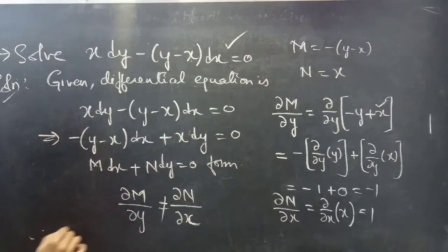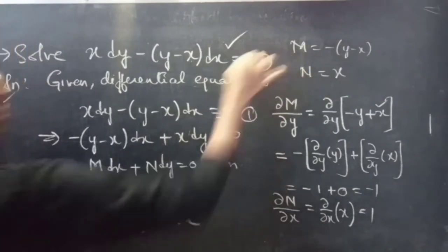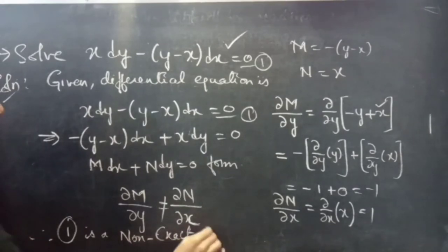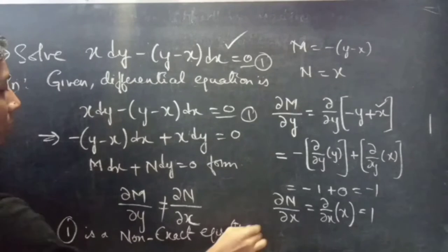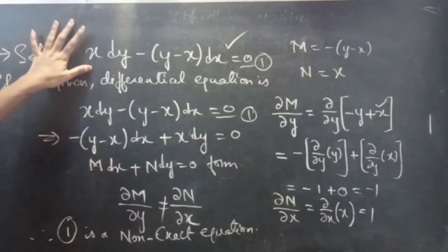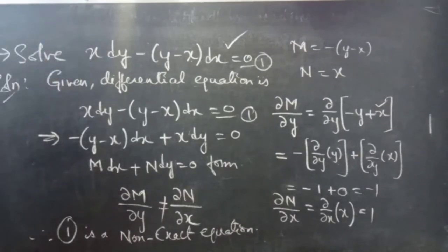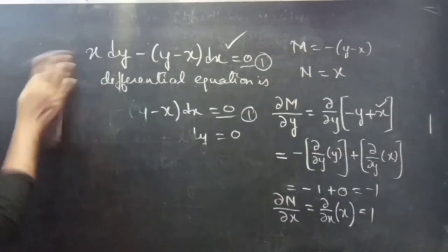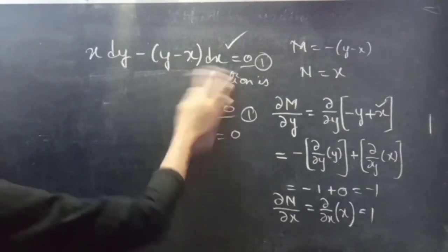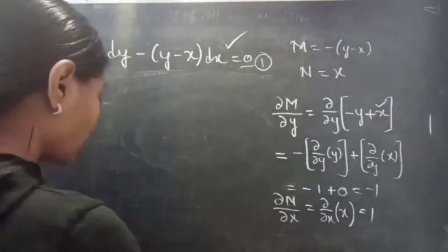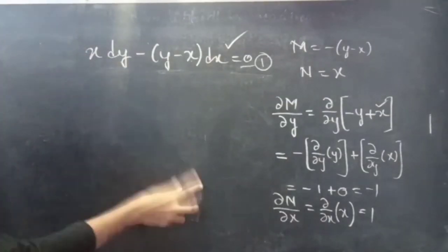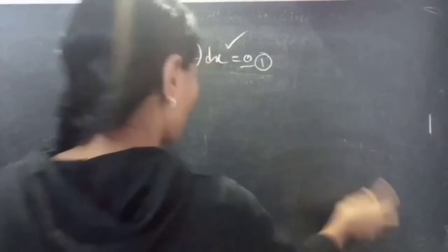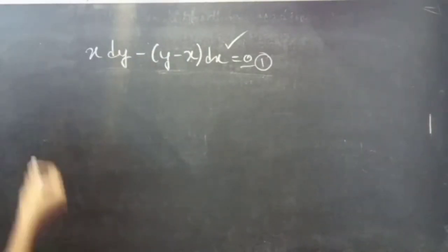Therefore, we will simply reduce this non-exact equation to exact equation form using the inspection method. In the inspection method, we will use a suitable differential to reduce the complexity, and from that we will get ∂M/∂y equals ∂N/∂x.